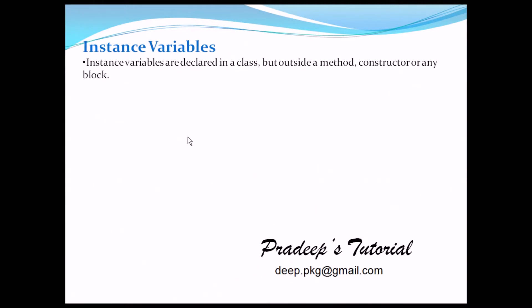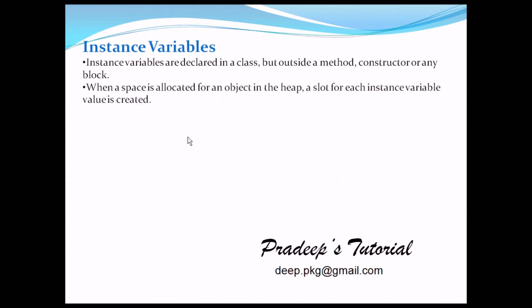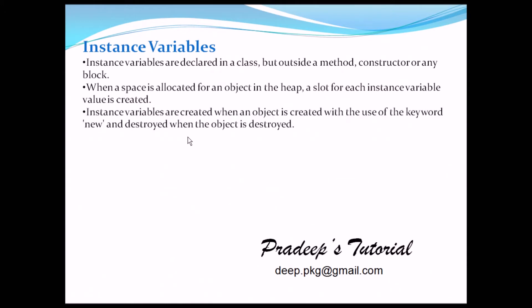What is an instance variable? Instance variables are declared in a class but outside a method, constructor, or any block. When space is allocated for an object in the heap, a slot for each instance variable value is created. We'll discuss how instance variables go into the object in the next chapter. Instance variables are created when an object is created using the 'new' keyword and are destroyed when the object is destroyed.